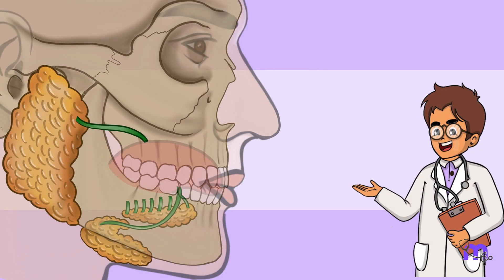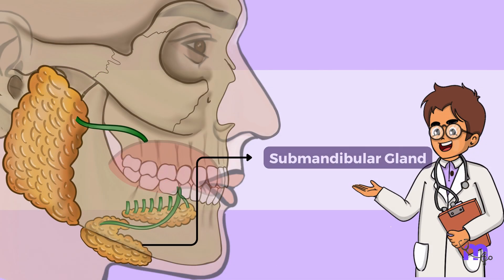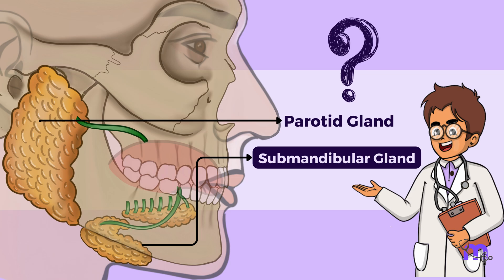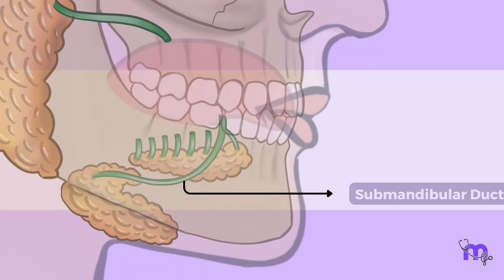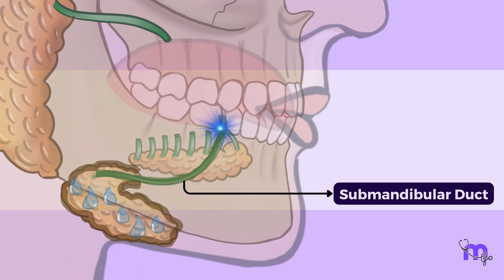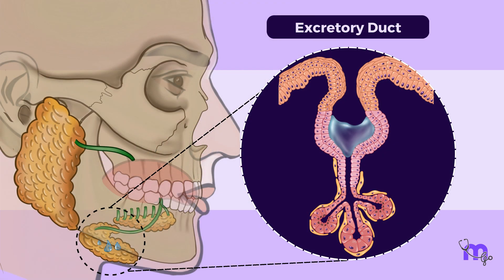Salivary calculi are more commonly seen in the submandibular gland than the parotid gland. The submandibular duct drains saliva against gravity, as the gland is situated lower than the ductal orifice, which contributes to the stagnation of saliva and makes it harder for the saliva to flow out.